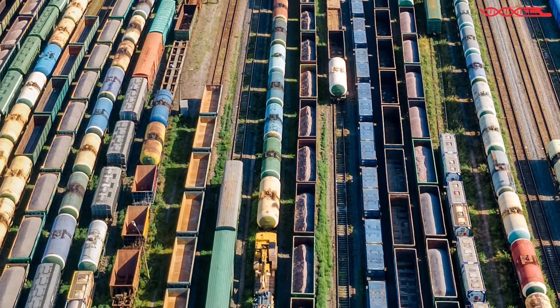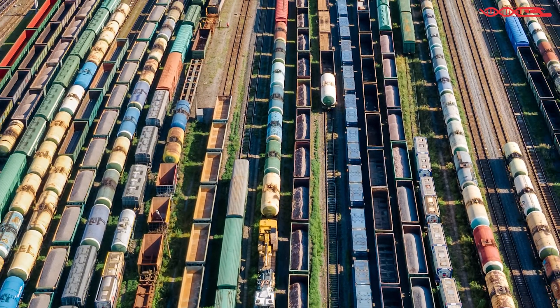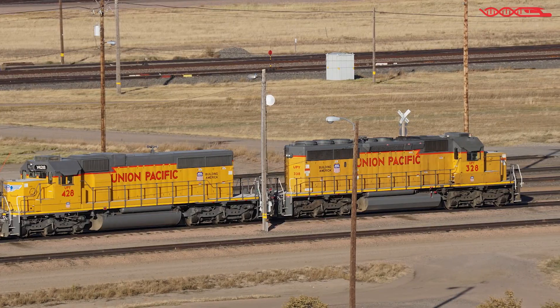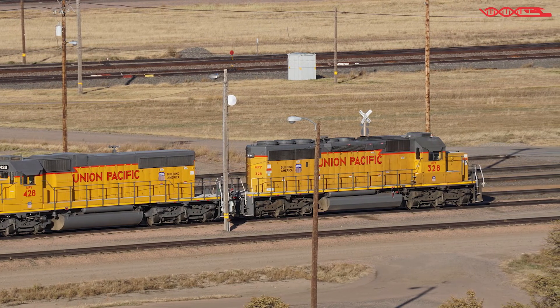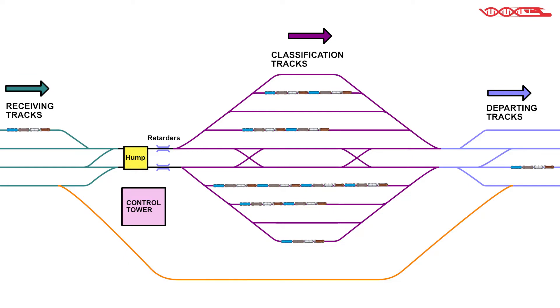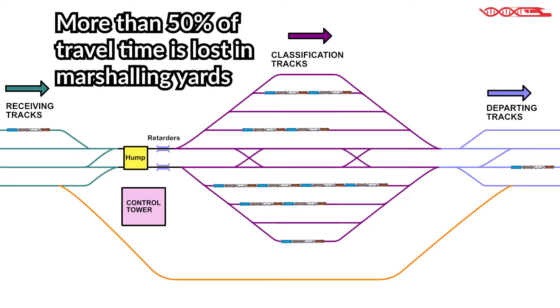The biggest problem with marshaling yards is that the time which cars spend during the process of changing from one inbound train to a new outbound train is very long. Sometimes it reaches up to 50% of the whole time which rail cars spend to get from point A to point B. This implicates that different and effective operation technologies need to be developed in order to reduce the time of rail cars in marshaling yards.